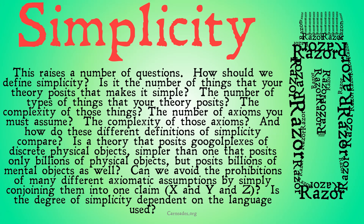This raises a number of questions. How should we define simplicity? Is it the number of things that your theory posits that makes it simple? The number of types of things your theory posits? The complexity of those things? The number of axioms you must assume? The complexity of those axioms? And how do these different definitions of simplicity compare? Is a theory that posits Googleplexes of discrete physical objects simpler than one that posits only billions of physical objects, but posits billions of mental objects as well?